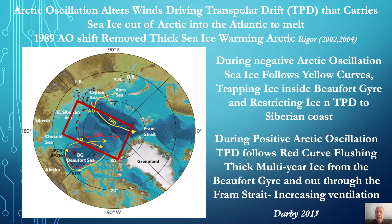The 1989 switch to the positive phase caused the transpolar drift to dive deep into the center of the Arctic, following the path of the red curve seen here, and then drive increasing amounts of thick multi-year sea ice out of the Arctic into the Atlantic through the Fram Strait.